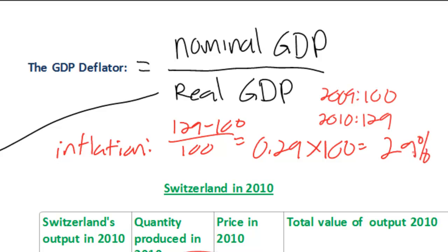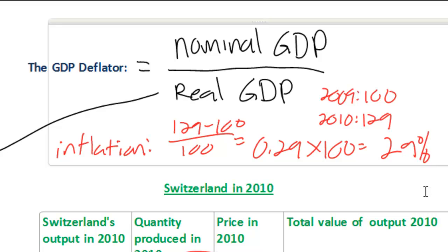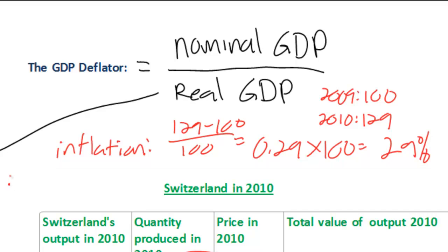In a previous lesson, we talked about another tool for measuring inflation: the consumer price index. The GDP deflator price index is simply another way to calculate the rate of inflation. Generally speaking, the GDP deflator index will be a broader measure of inflation than the consumer price index. The reason is that the consumer price index considers only a basket of goods consumed by the typical household, whereas the GDP deflator price index considers goods produced and consumed by all sectors of the economy, including the government sector, private firms, and goods produced for export.